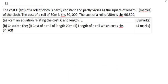The cost C of a roll of cloth is partly constant and partly varies at the square of length L of the cloth. The cost of a roll of 50 meters is 50,000. The cost of a roll of 80 meters is 96,800. Question A says, form an equation relating the cost C and the length L.